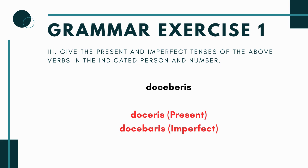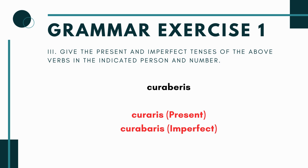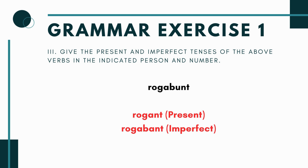Next you have 'doceberis' — that would be 'doceris' in the present and 'docebaris' in the imperfect. Next you have 'laudabor' — that would be 'laudor' in the present and 'laudabar' in the imperfect. Next you have 'curaberis' — that would be 'curaris' in the present and 'curabaris' in the imperfect. And the last one is 'rogabunt' — that would be 'rogant' in the present and 'rogabant' in the imperfect.